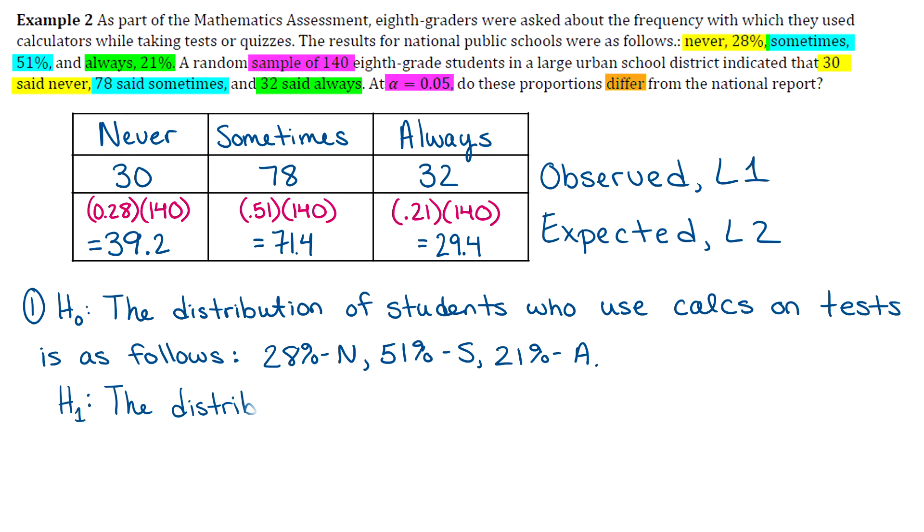And then your alternative hypothesis, it's always going to be the statement that the distribution is not as stated in the null. So that one will stay the same regardless of what the question is talking about.